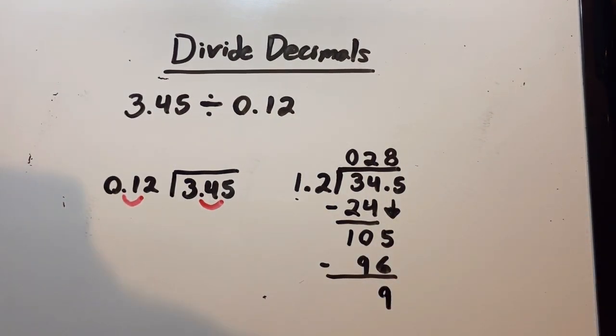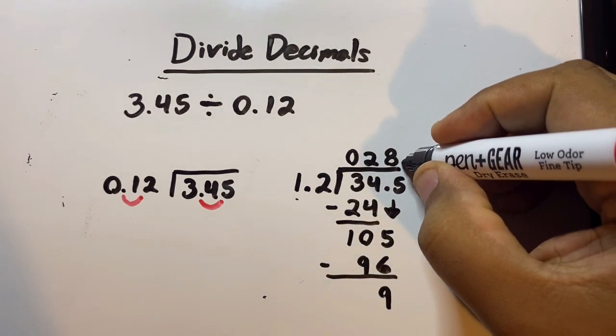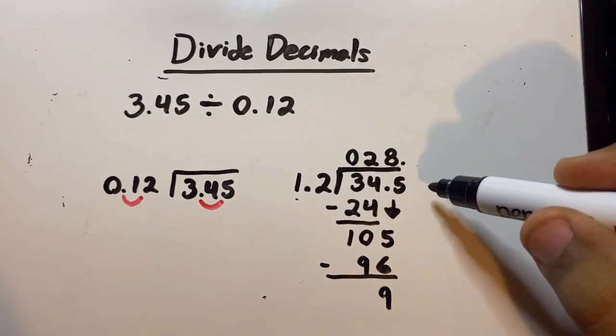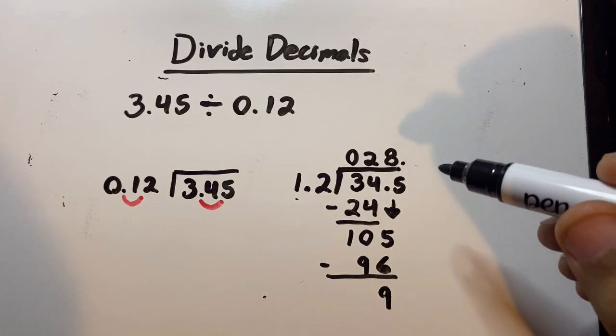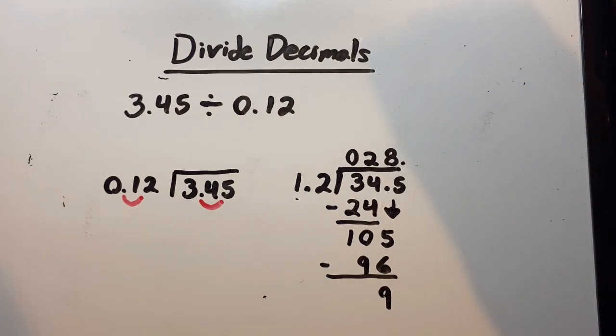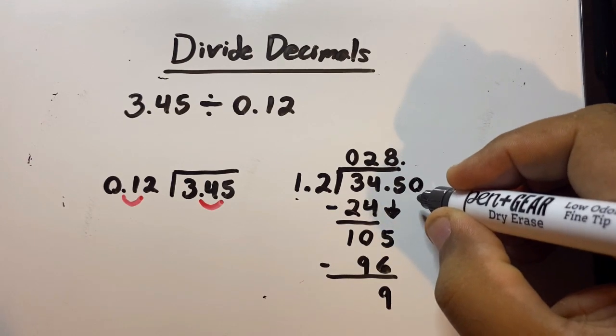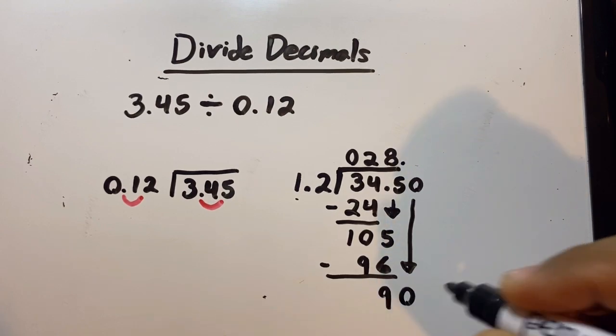We are not done yet. Now we have to put our decimal point because we've already utilized all the numbers here. We put our decimal point here at the end. Don't worry about this—leave this alone, just focus on the top. Dividing decimals is a little complicated, but once you get it, it'll be simple. Now we have to add a zero. We're gonna drop down this zero, and this 9 becomes a 90.